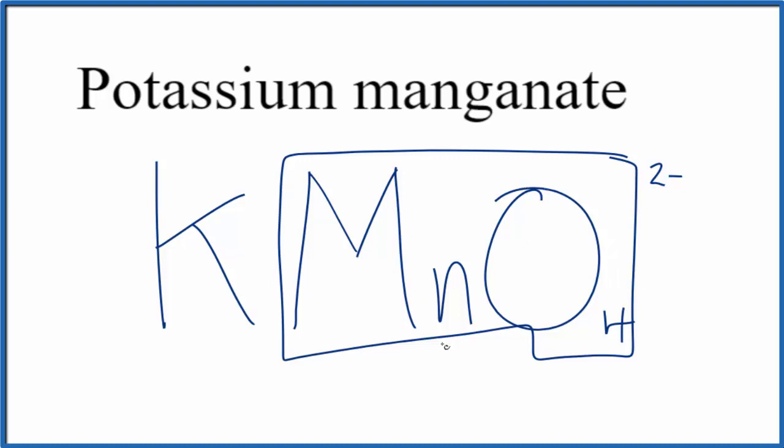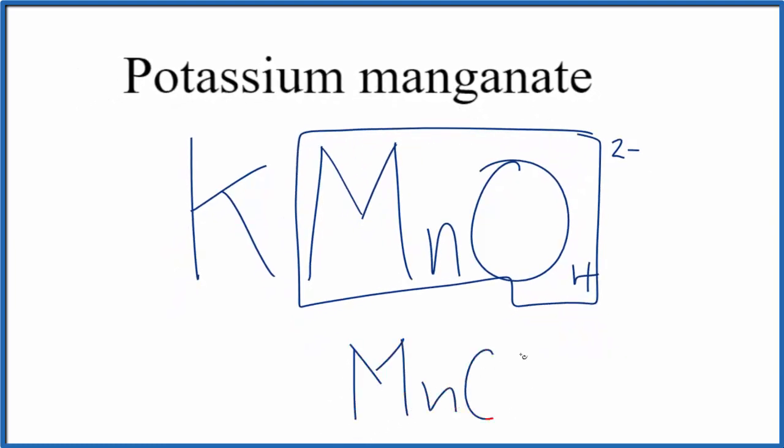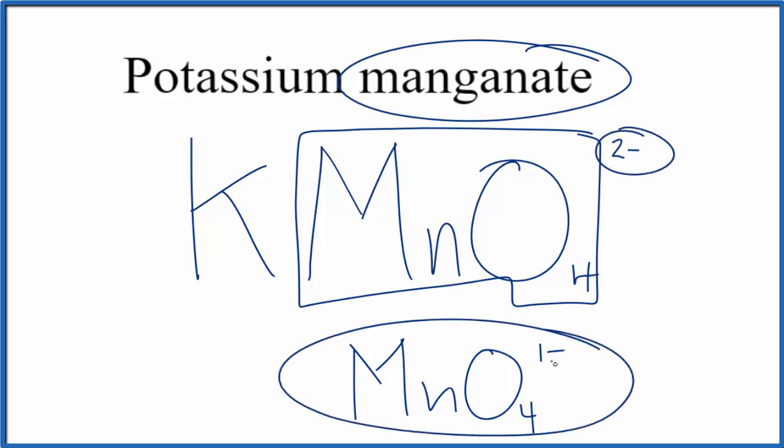This one's a little bit confusing because there's something called the permanganate ion. If you're looking at the permanganate ion, that's MnO4 and it has an ionic charge on the whole thing of 1-, but here we're talking about the manganate, so 2-, just something to be careful about because you'll see this permanganate quite frequently.